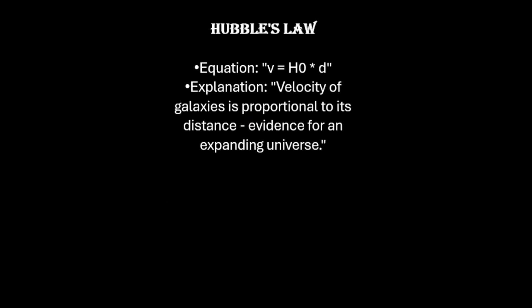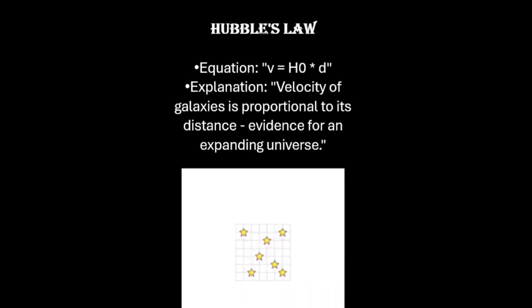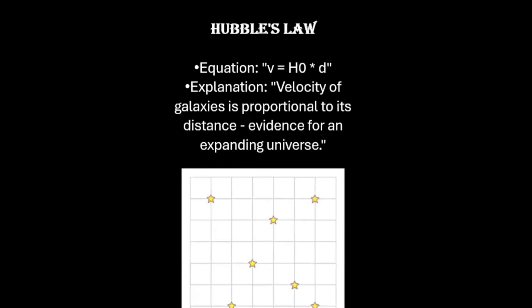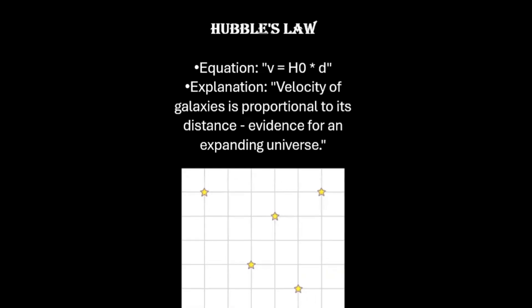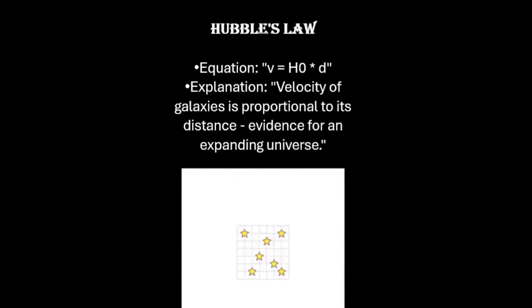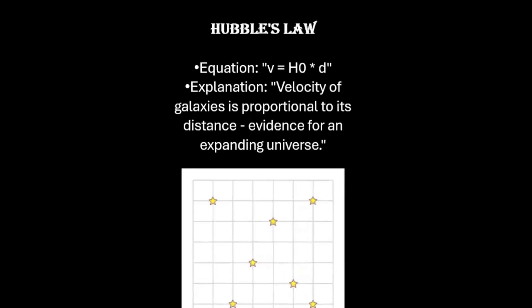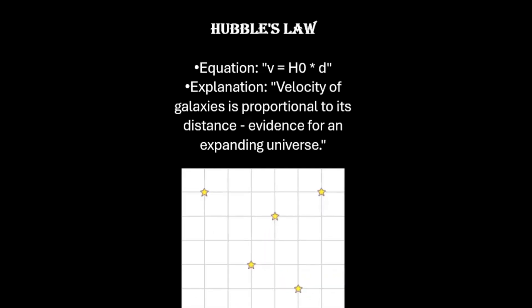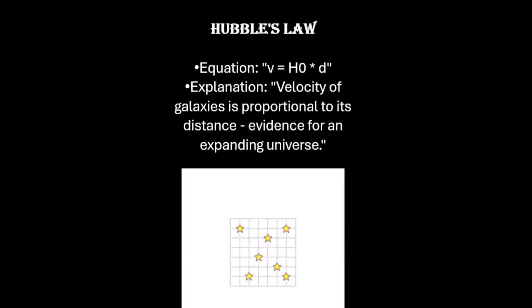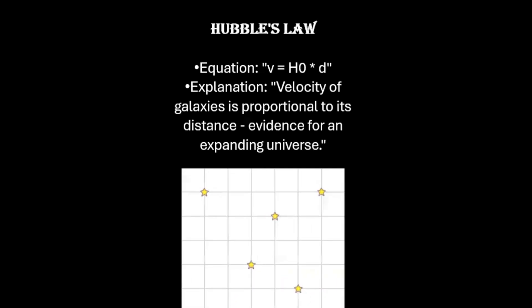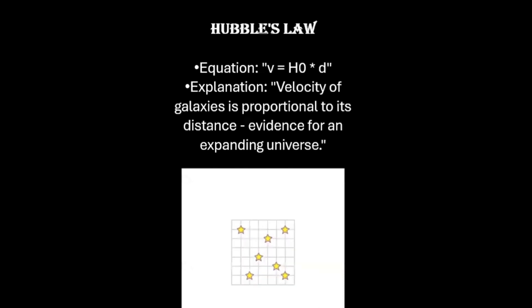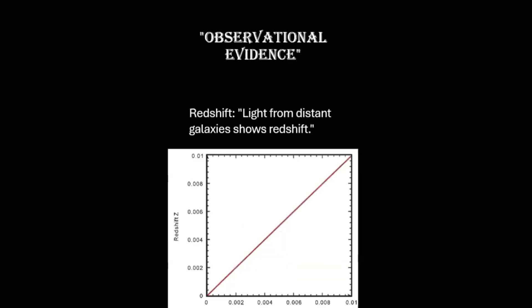Let's have a look at this animation. As the fabric of space expands, the further the star is, the faster it is receding. So the further stars recede away more quickly, which shows that velocity is directly proportional to the distance of the stars.